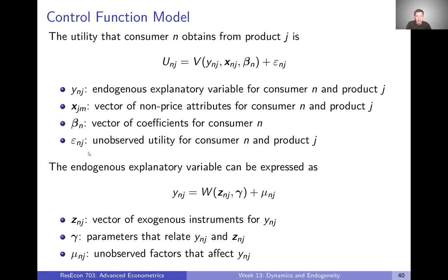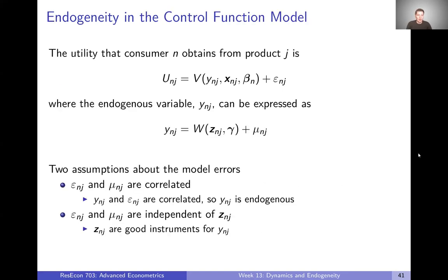Let's think of mu as the unobserved factors that affect Y. We've got utility as a function of Y, X, beta, and epsilon. Y is a function of Z, gamma, and mu.